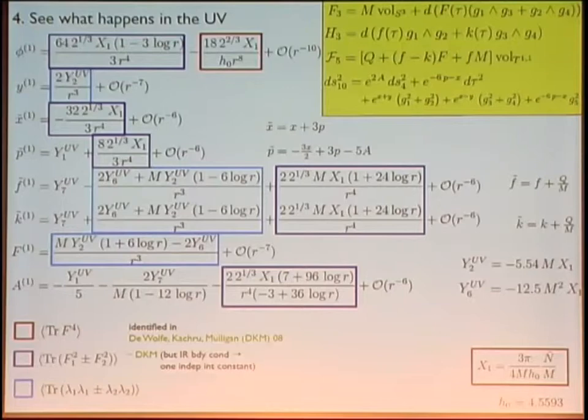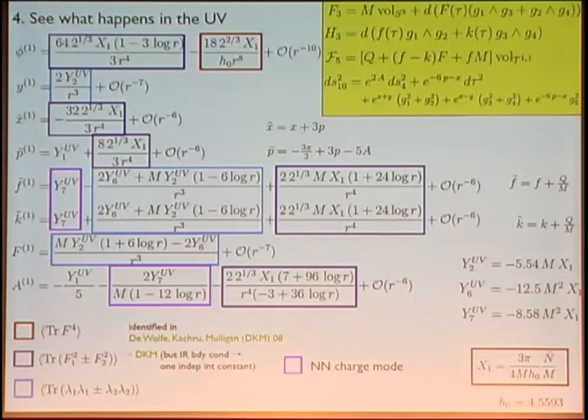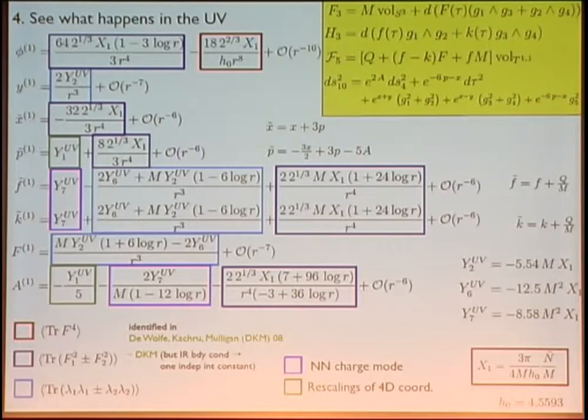These are all the normalizable modes that are turned on. There is also Y7_UV corresponding to a non-normalizable charge mode, which is fine since we said it has to be there. And then there is Y1, the rescaling of the four-dimensional coordinates, which appears in the warp factor. So this is the solution: it has normalizable modes, the expected non-normalizable charge mode, and this rescaling of four-dimensional coordinates.